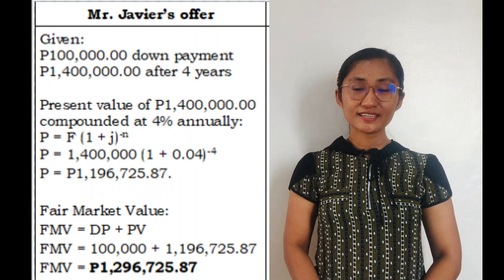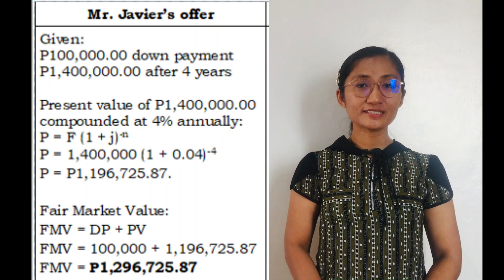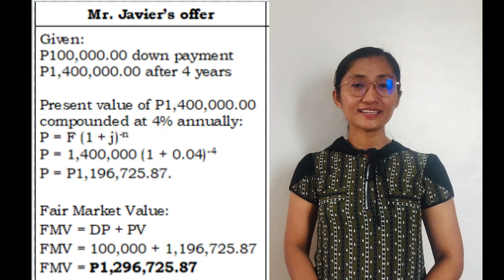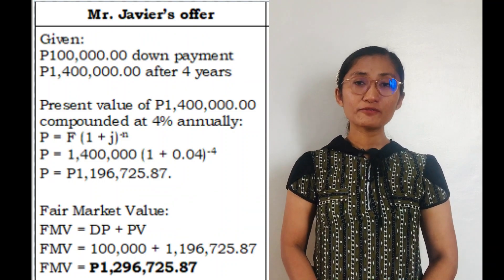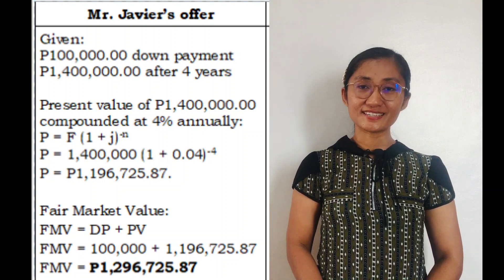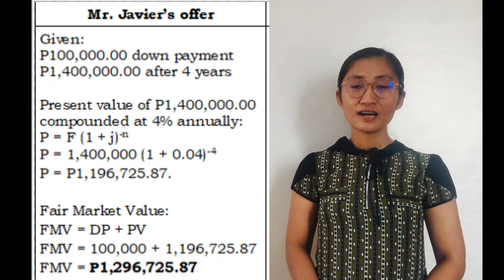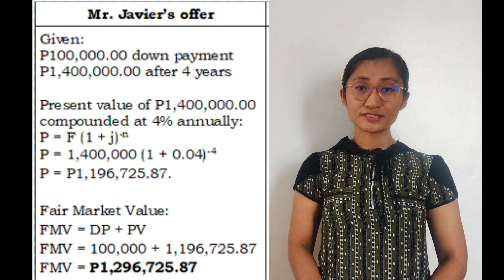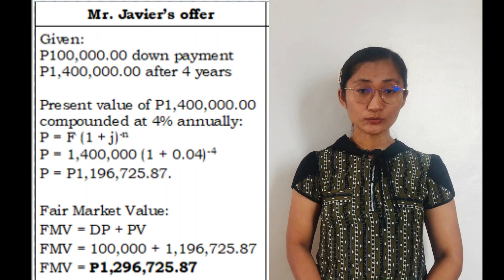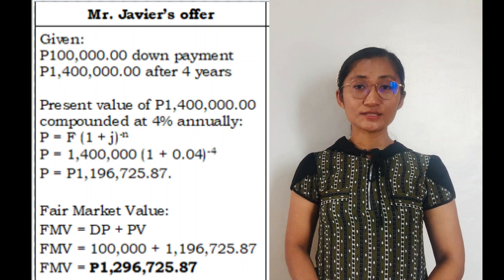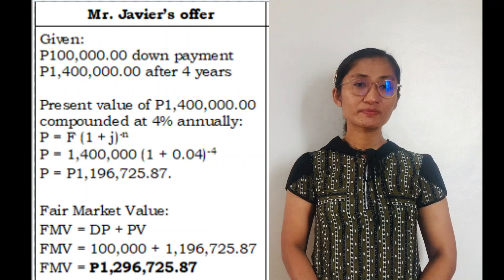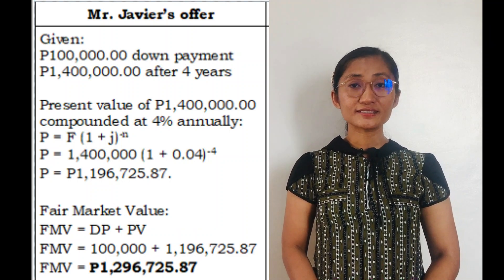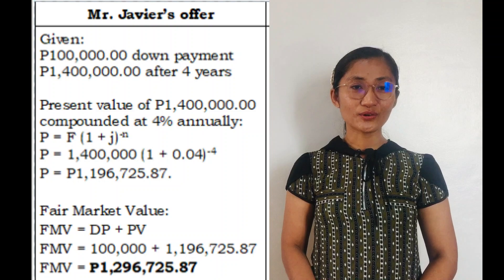Our J is 4%, or in decimals 0.04. And N is M times T, where M is the frequency of conversion and T is time. Our M here is 1 because it's compounded annually and our T is 4 years. So 1 times 4 is 4, and since it's negative N, it's negative 4.